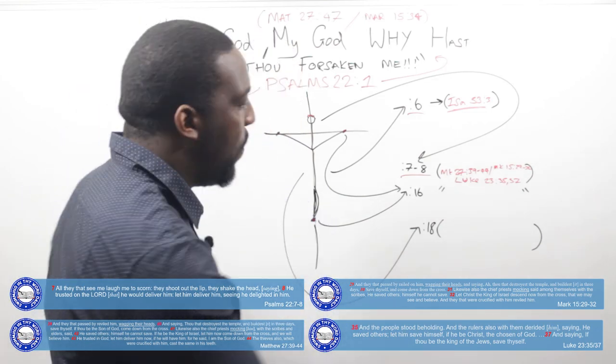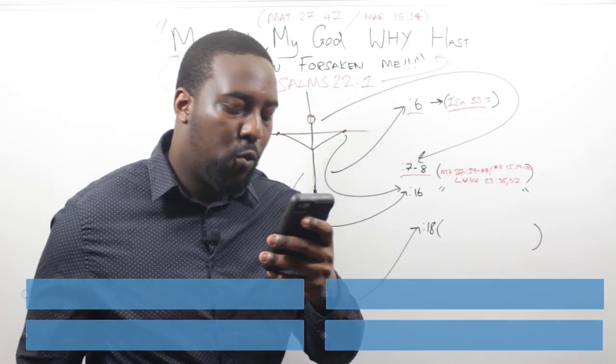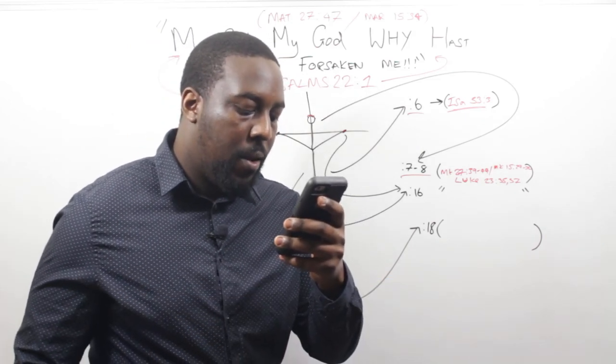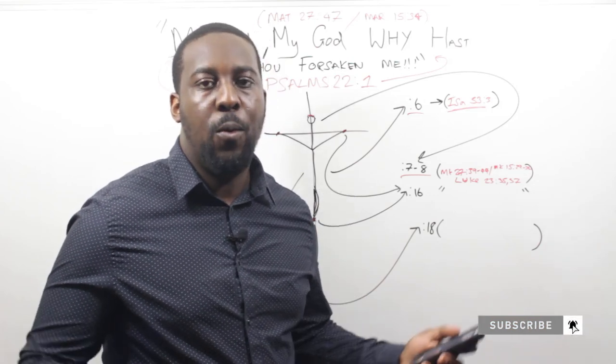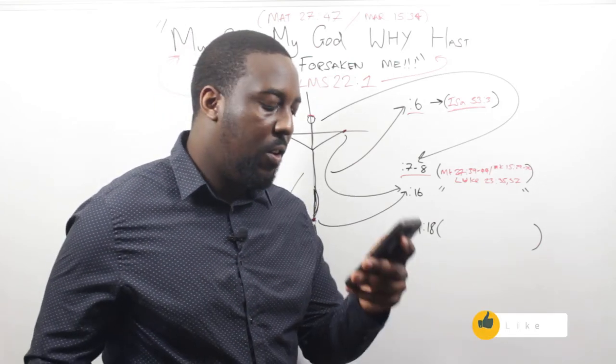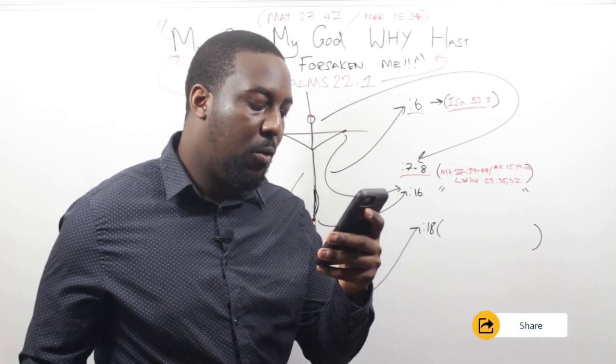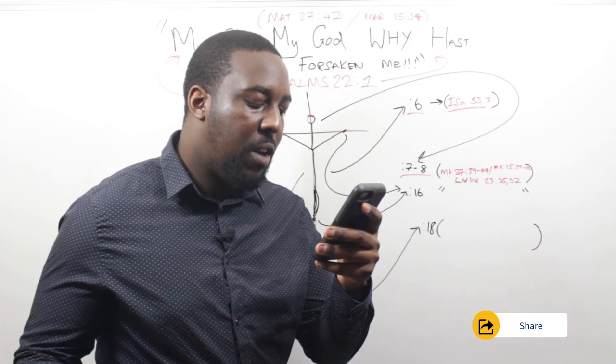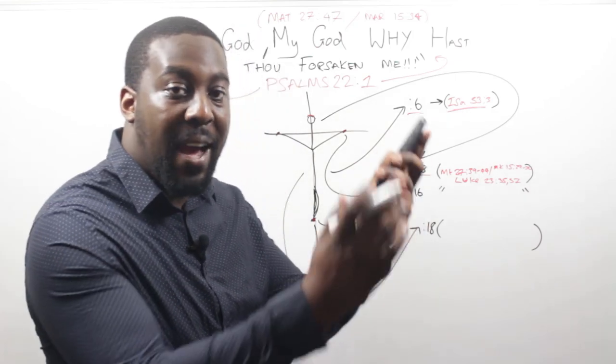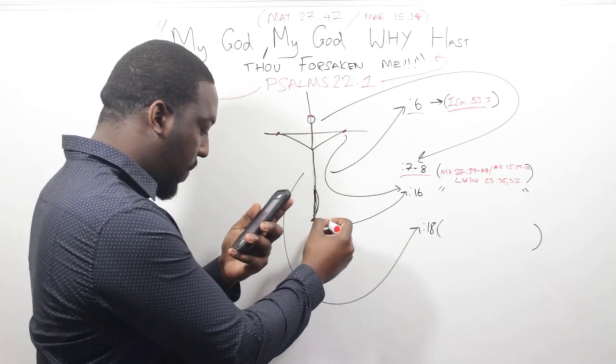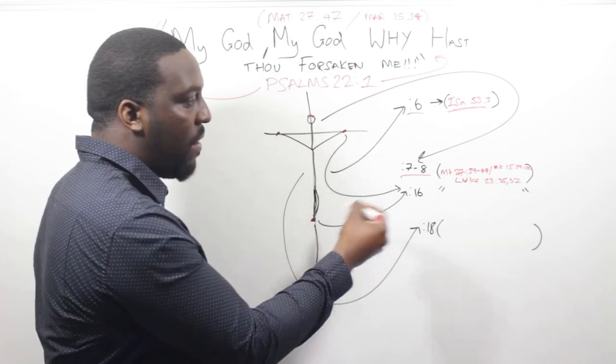The next thing we're going to highlight here, we see verse 16. What does verse 16 of Psalms 22 say? It says, For dogs have compassed me. Who was around him? The Romans. One way Gentiles are referenced in scripture is as dogs. Look what he says, For dogs have compassed me, the assembly of the wicked have enclosed me. They pierced my hands and feet.